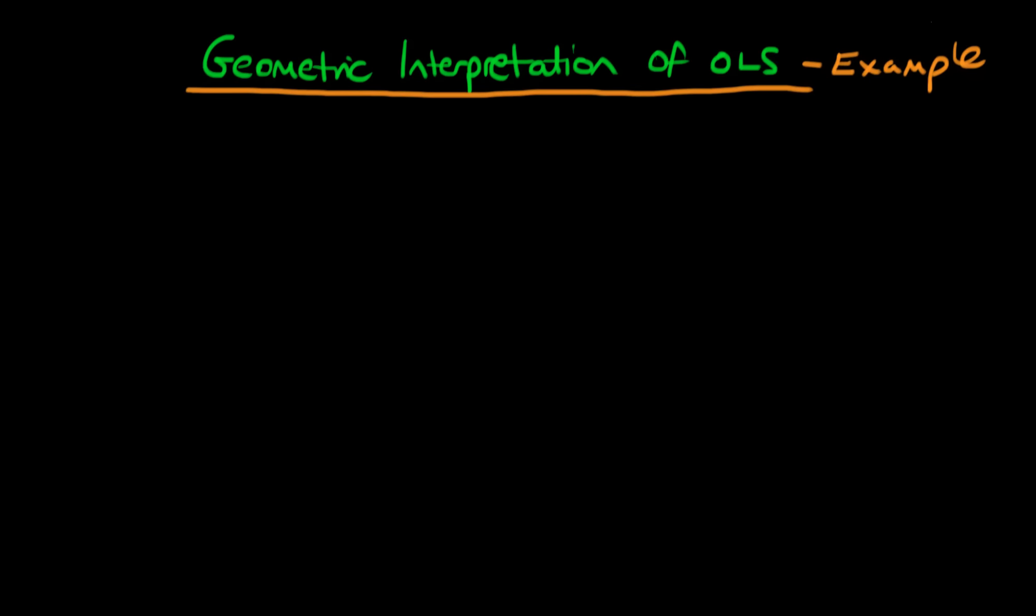In this video I want to provide an example of how we can interpret OLS geometrically. So imagine that we have a really simple regression model. In non-matrix form, we just have that our dependent variable y, let's say yi, is equal to a constant beta 0 plus some random error ui.